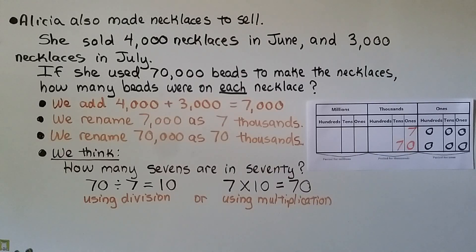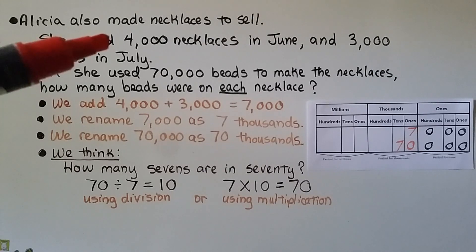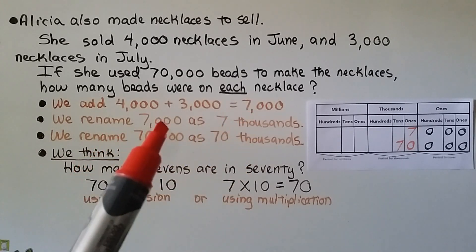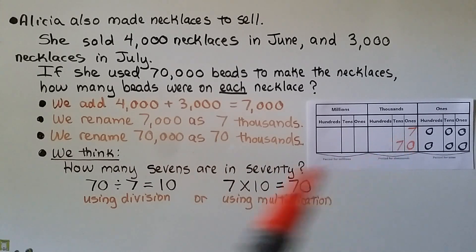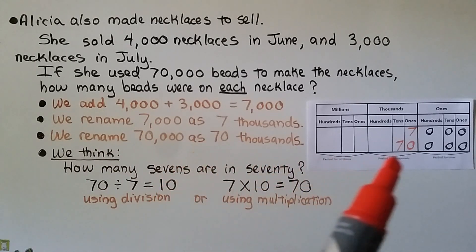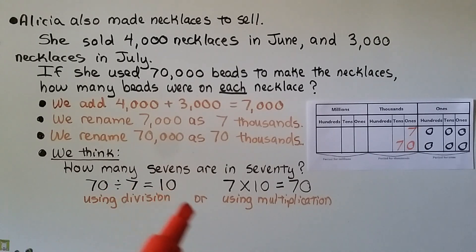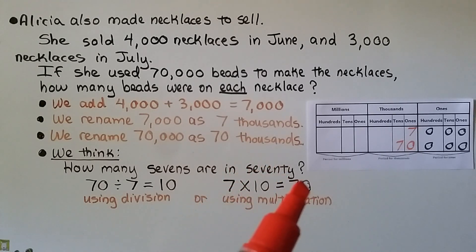Alicia sold 4,000 necklaces in June and 3,000 necklaces in July. If she used 70,000 beads total, how many beads were on each necklace? We add 4,000 and 3,000 to get 7,000 necklaces. Renaming: 7,000 thousands vs. 70,000 beads. We compare 7 and 70 — how many 7s are in 70? Using division, 70 ÷ 7 = 10, or 7 × 10 = 70. So there were 10 beads on each necklace.